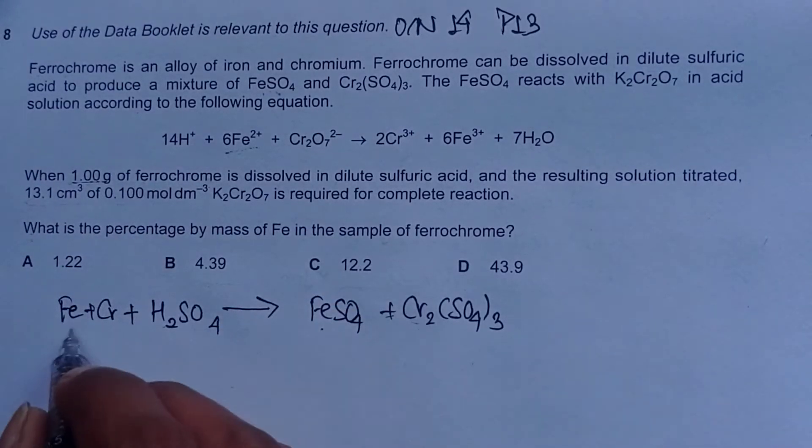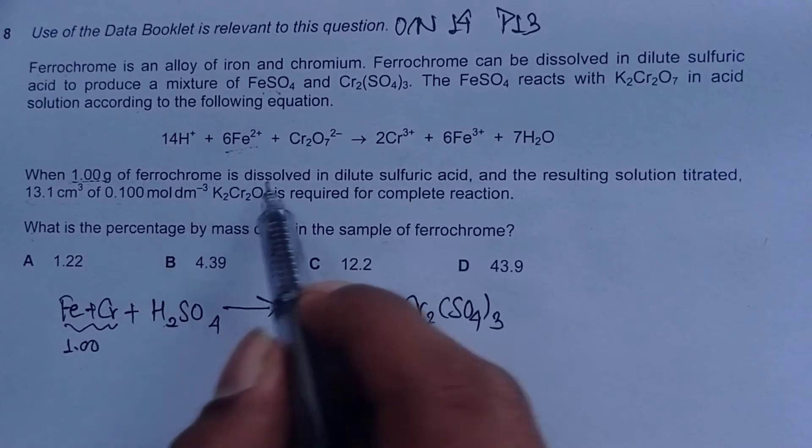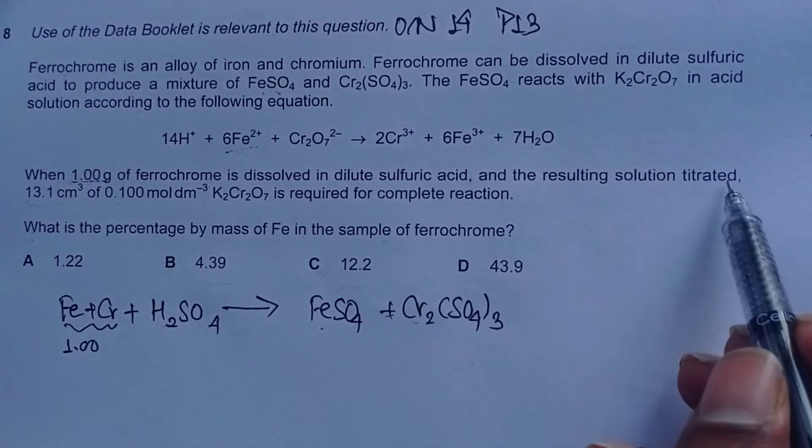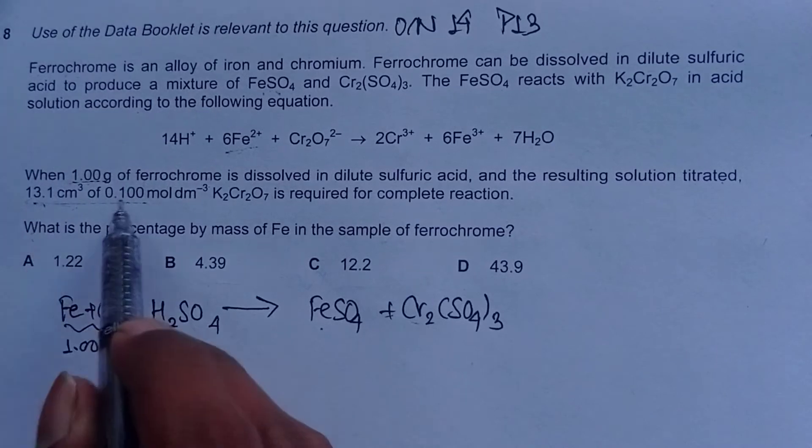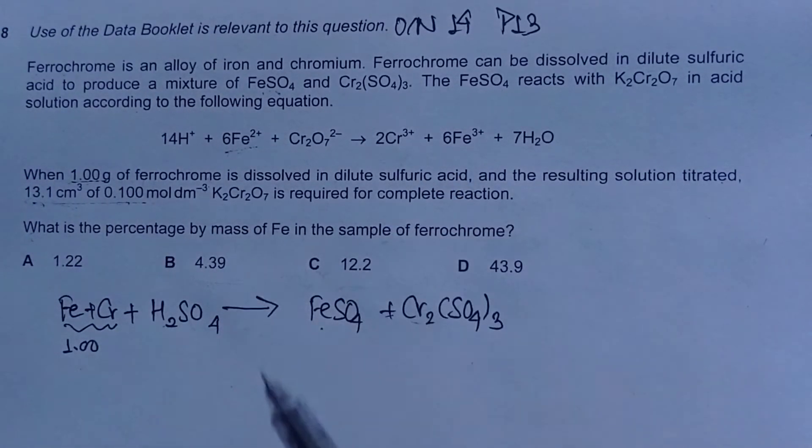When one gram of ferrochrome—this total one gram of ferrochrome—is dissolved in dilute sulfuric acid and the resulting solution titrated, this volume and concentration of K2Cr2O7 is required. What is the percentage by mass of Fe?